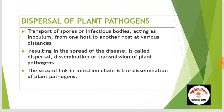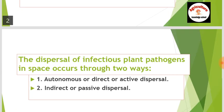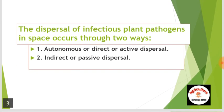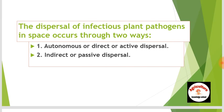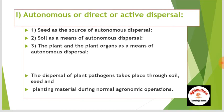The second link in the infection chain is the dissemination of plant pathogens. Dispersal, dissemination or transmission are the same words for plant pathogens. The dispersal of infectious plant pathogens in space occurs through two ways: first is autonomous or direct or active dispersal, and second is indirect or passive dispersal.